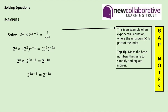And the only way that 2 to the power 4x minus 3 can equal 2 to the power minus 4x is if 4x minus 3 is the same as minus 4x. So we can now reduce that into a linear equation: 4x take away 3 equals negative 4x. And that can be solved by rearranging because 8x equals 3 and therefore x equals 3 over 8.